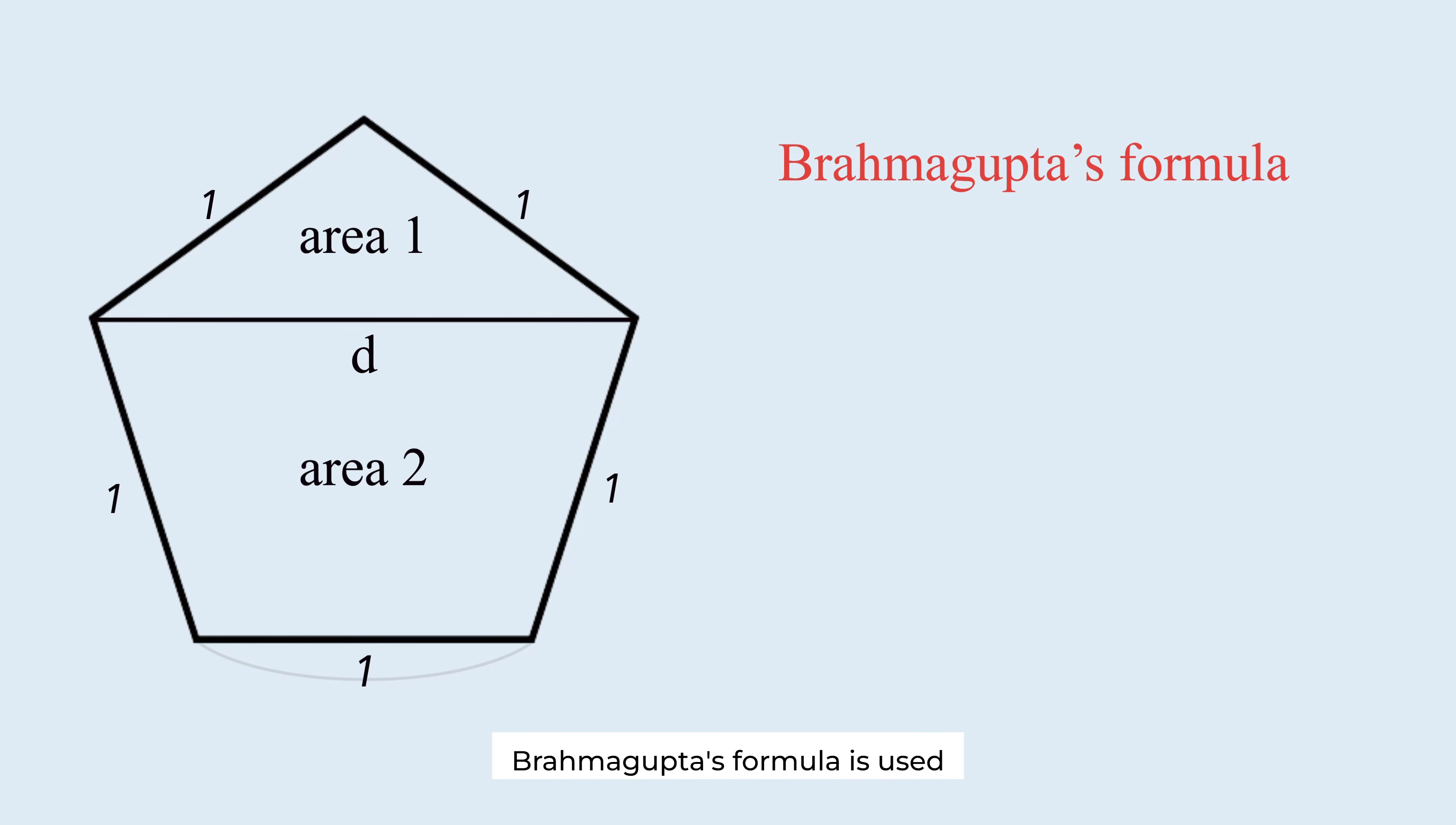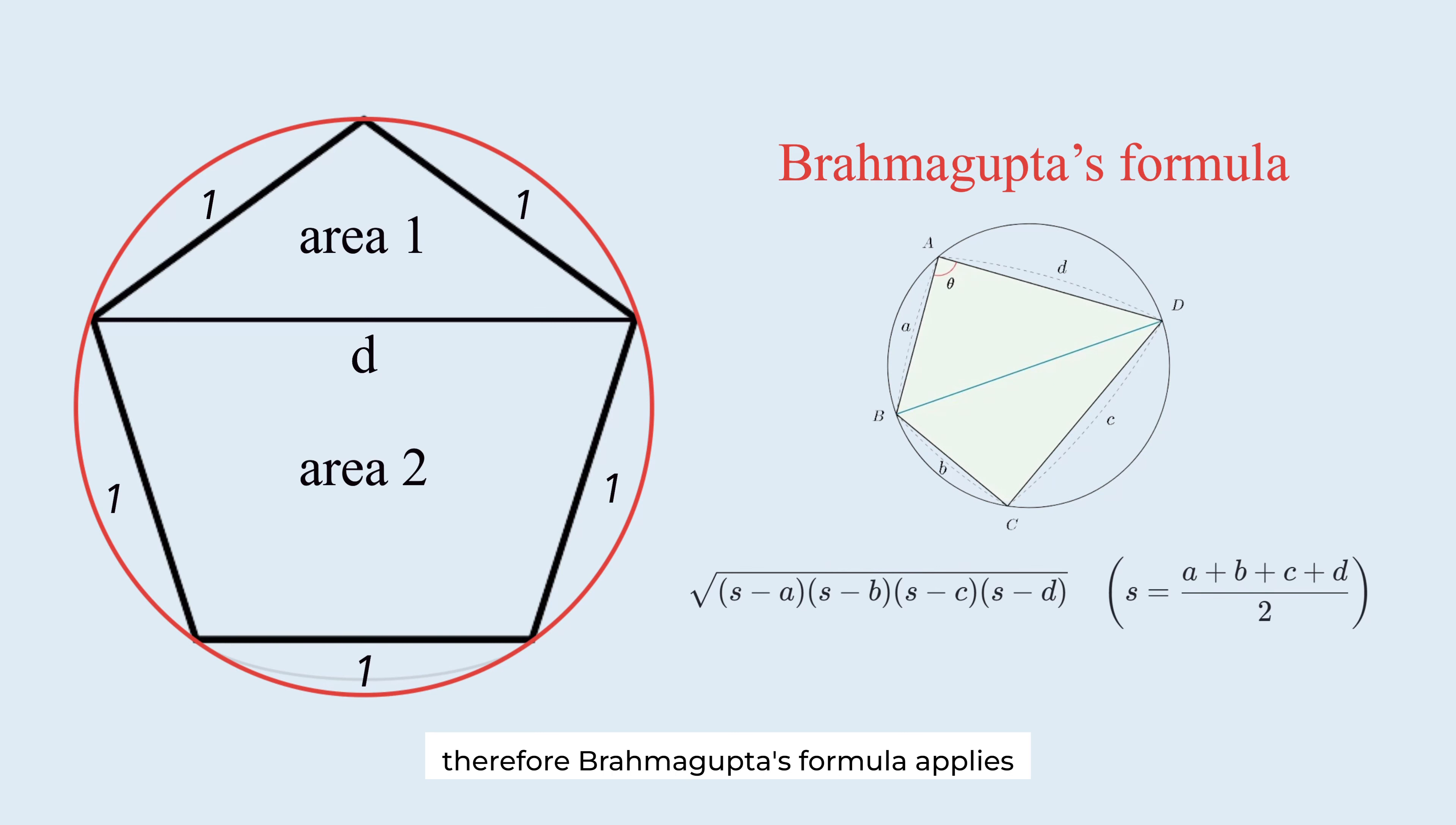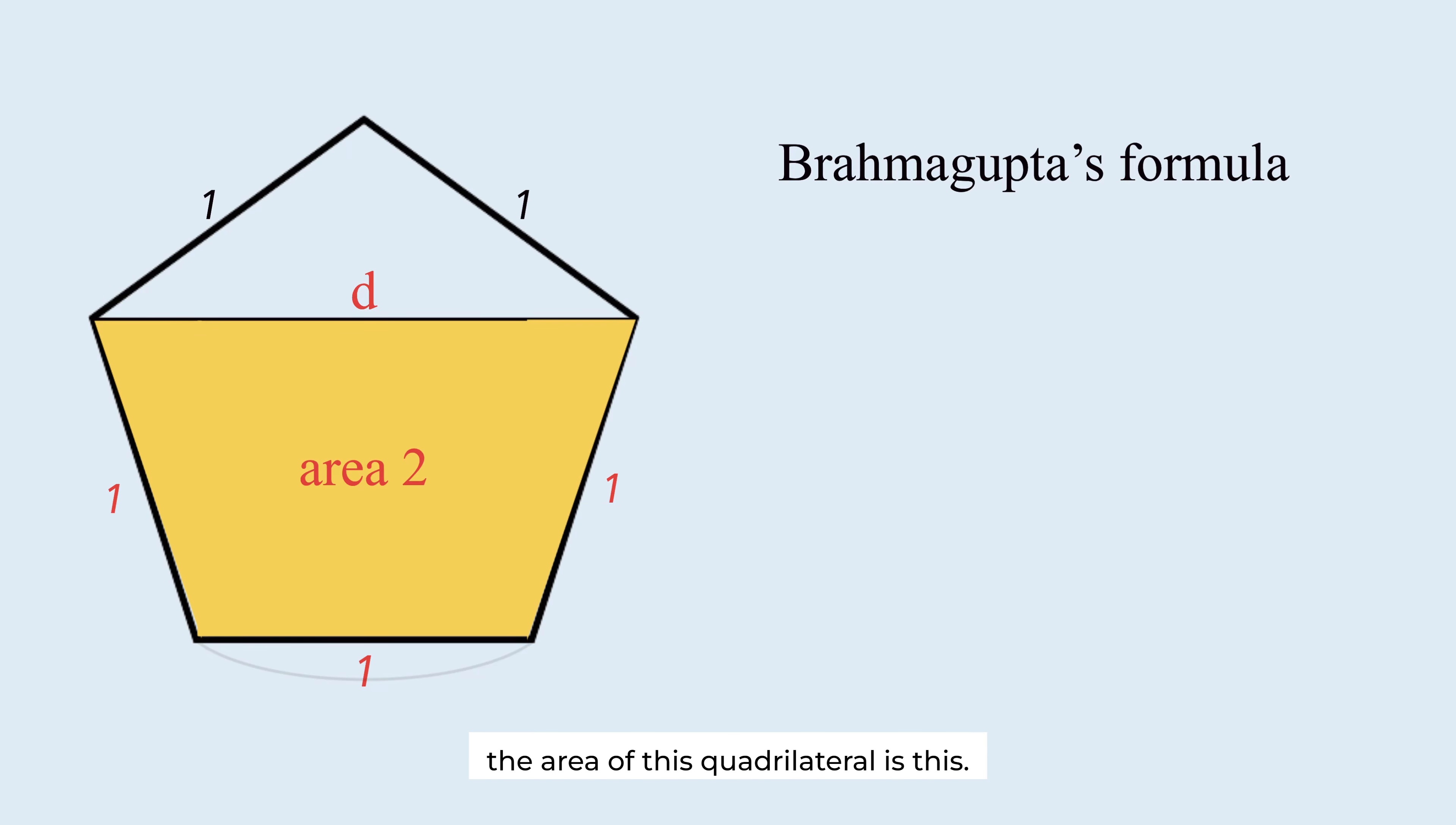Brahmagupta's formula is used to find the area of a quadrilateral when the length of all four sides are known. But there is one condition. The quadrilateral must be inscribed in a circle. Therefore, Brahmagupta's formula applies to this quadrilateral. The area of this quadrilateral is this.